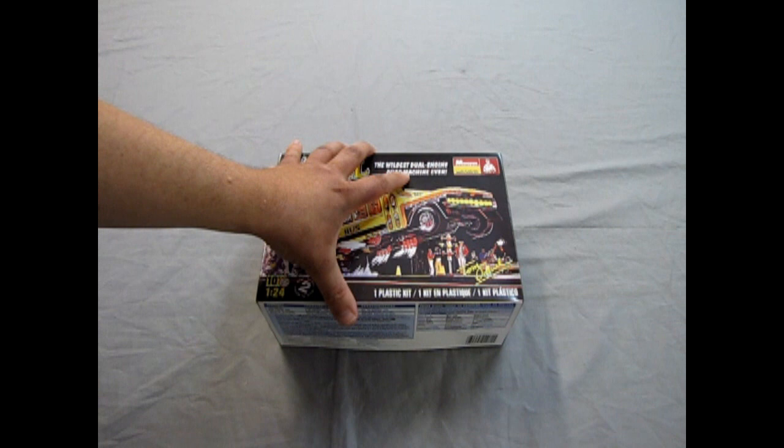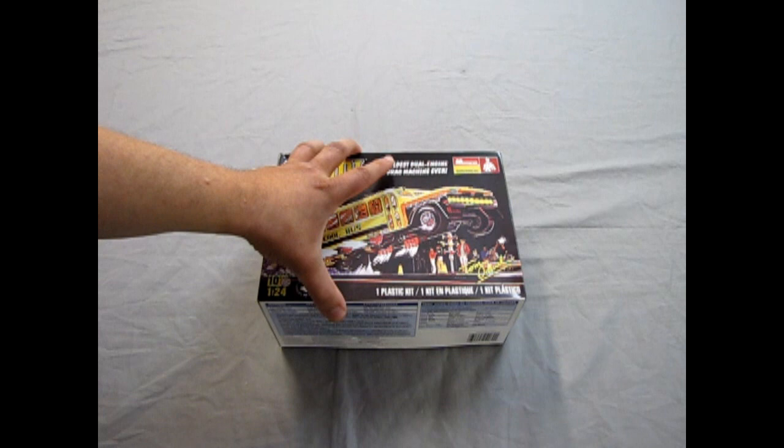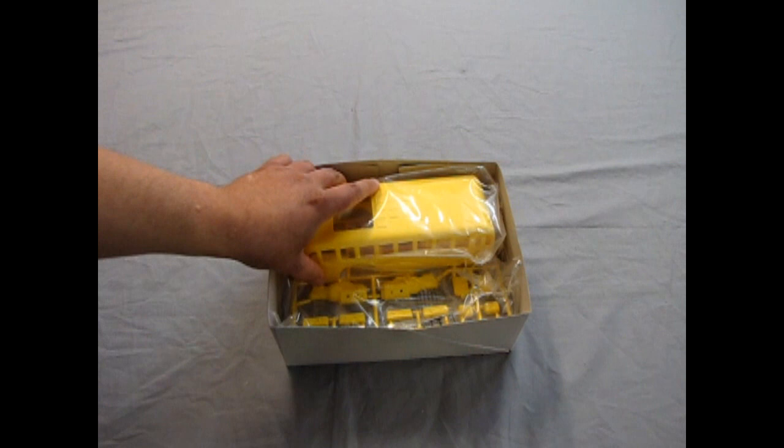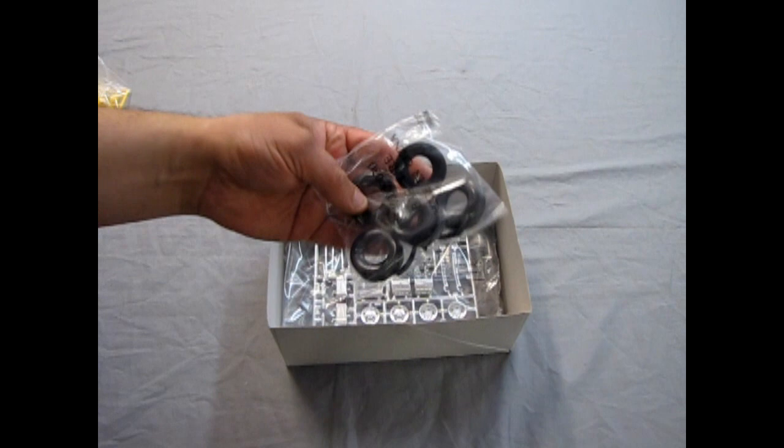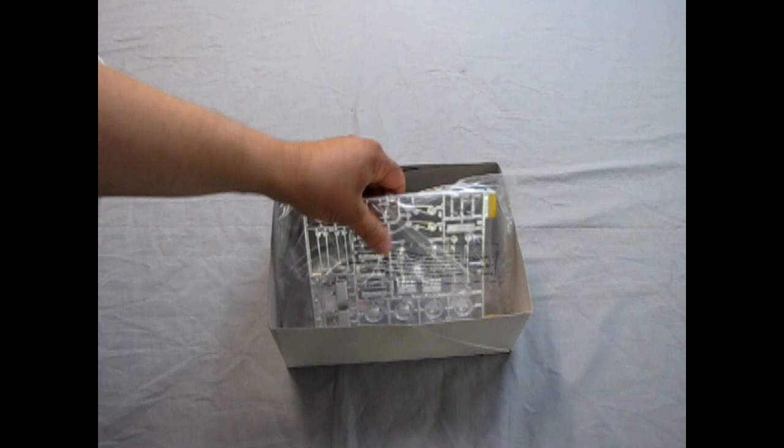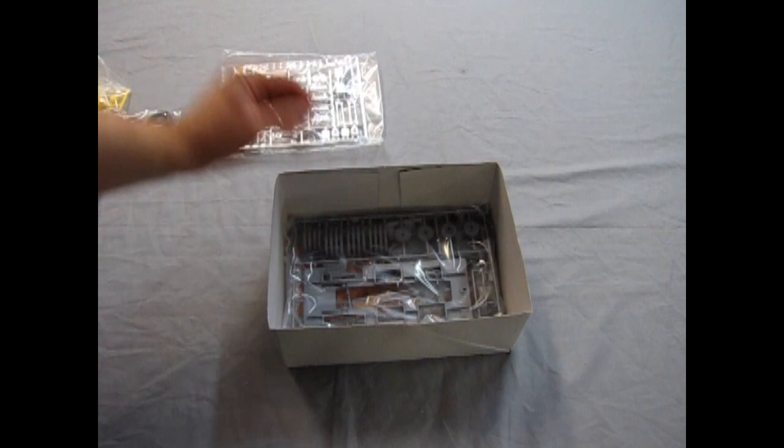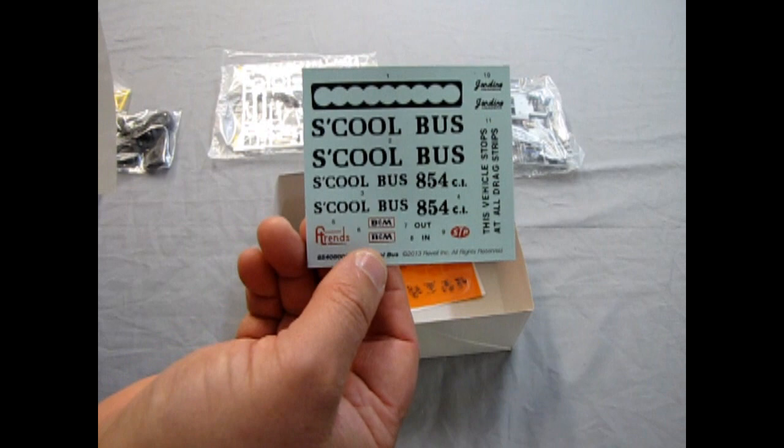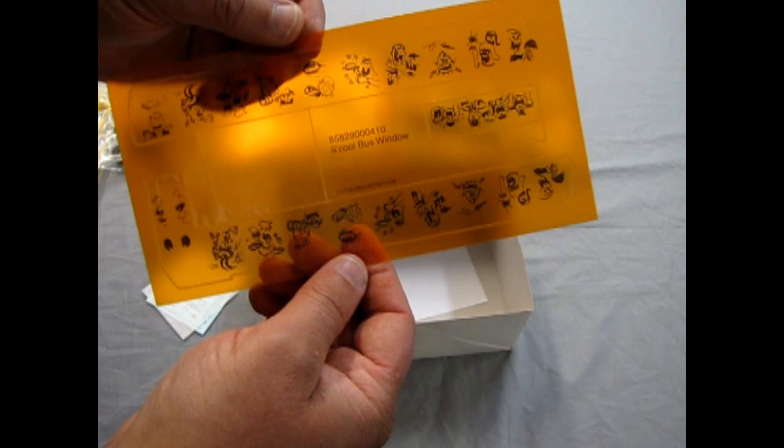Now I'm just gonna take a quick little look under the lid before we really get into this. We got our instructions here, a nice big bunch of yellow plastic as well as some wheels for our school bus, and all this awesome chrome. We also get some gray pieces as well as these amazing school bus decals and window transfers in orange which are very cool.